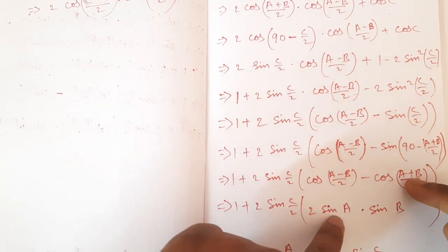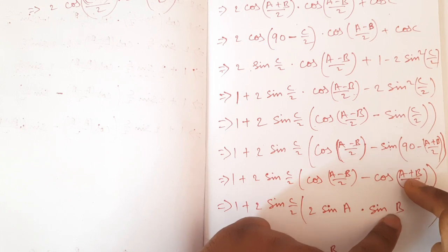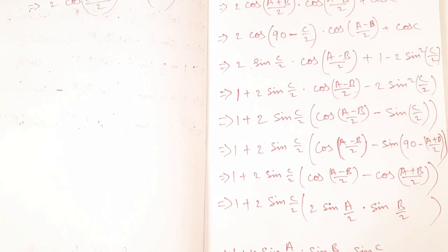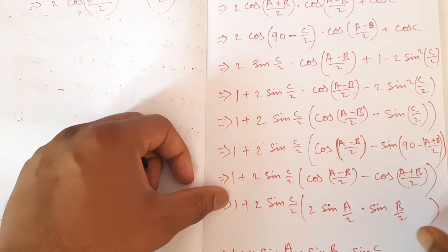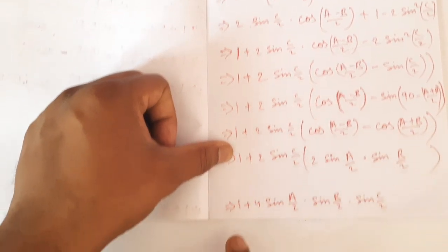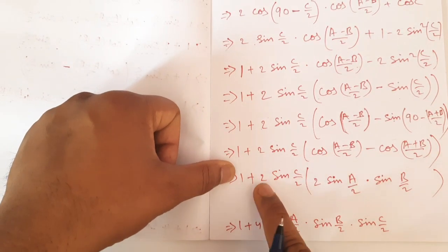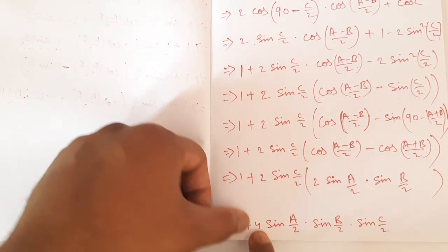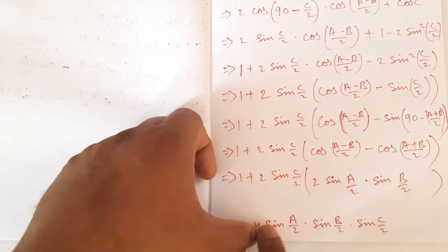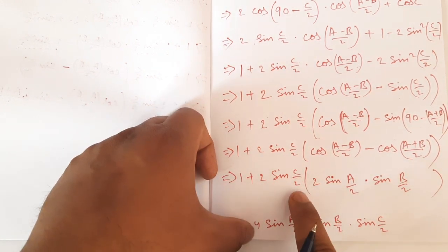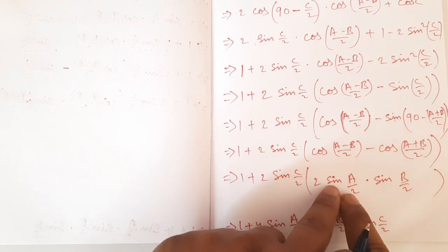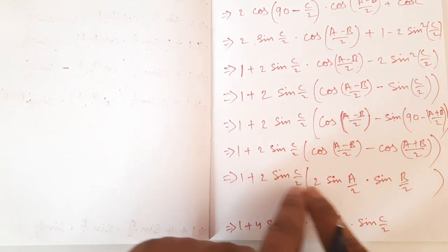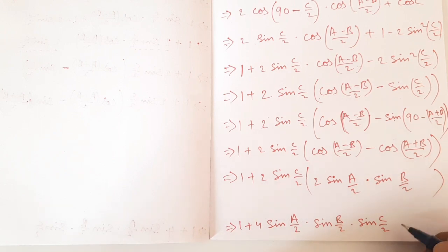This gives 2·sin A·sin B. So 2 equals 2, confirming the identity. The final answer is proven.